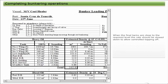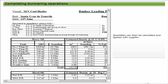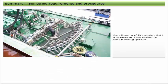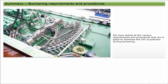When the final tanks are close to the required level, the rate should be slowed down to allow controlled topping off. The supplier should be informed and be ready to stop delivery at completion. All valves should be closed, any blanking plates refitted, and all tanks should be sounded. Quantities can then be calculated and agreed with the supplier. Since bunkering operations are the source of a majority of pollution incidents involving fuel oils, it is necessary that every precaution is taken to avoid pollution incidents. We have looked at the various requirements and procedures that are in place to minimize the risk of pollution during bunkering.